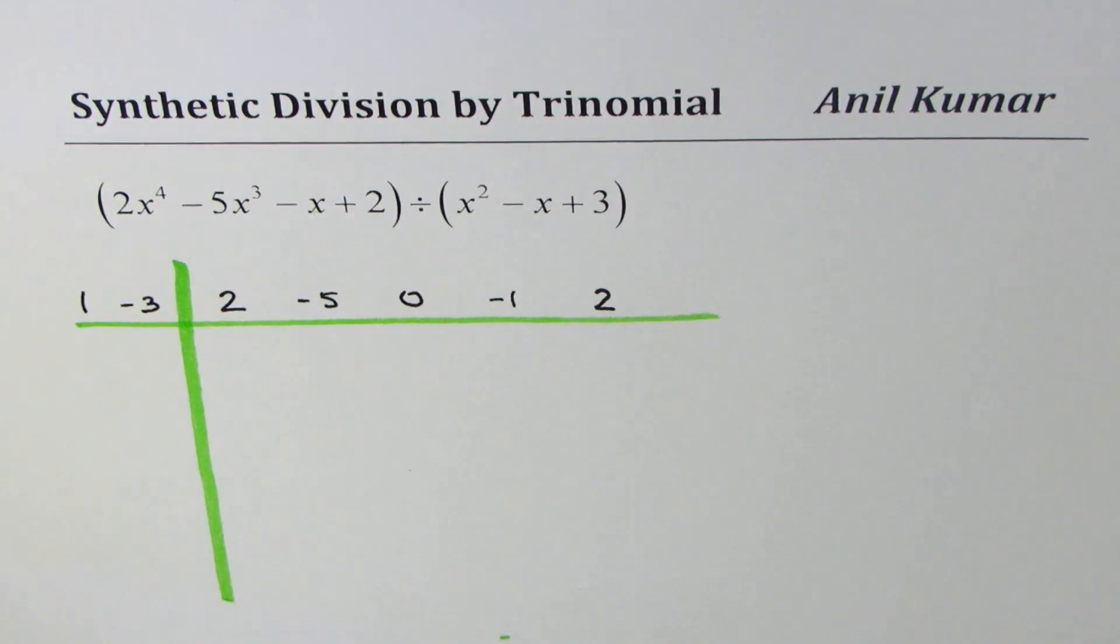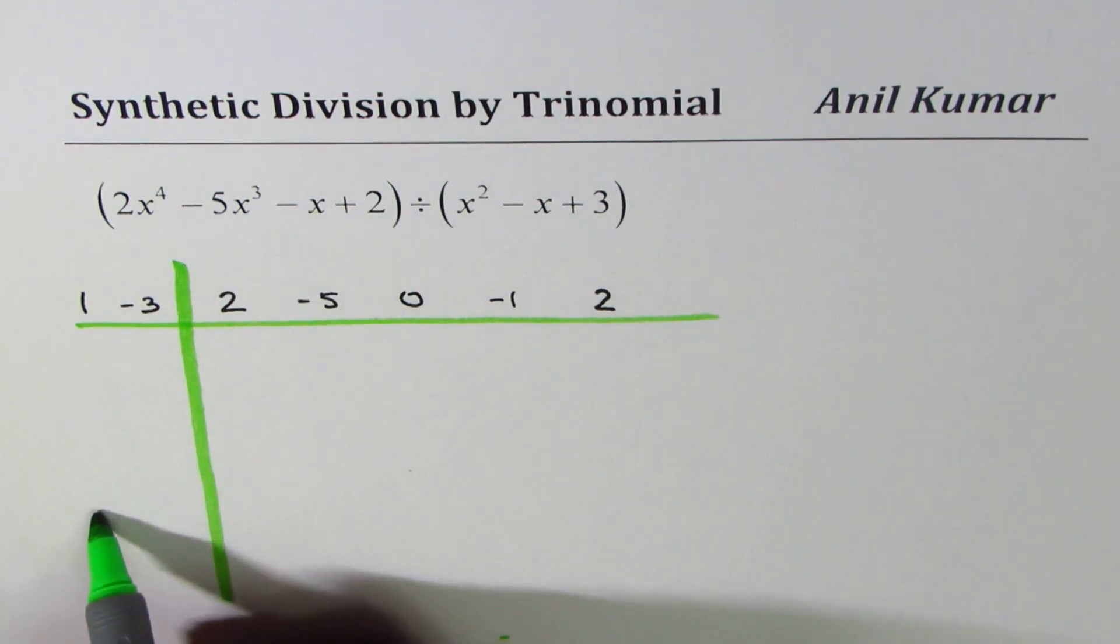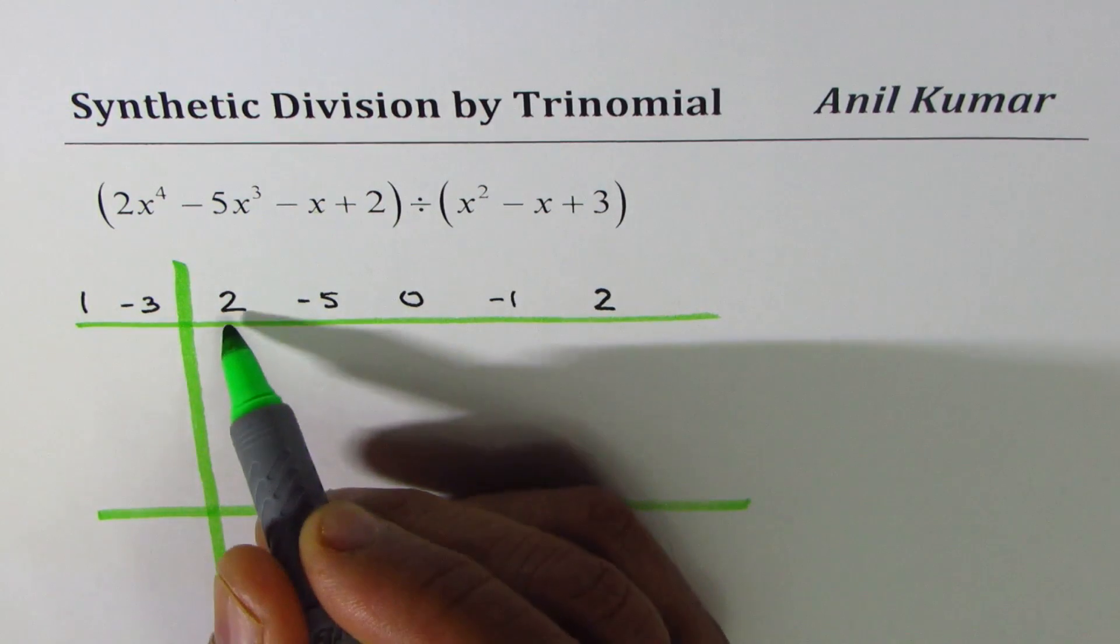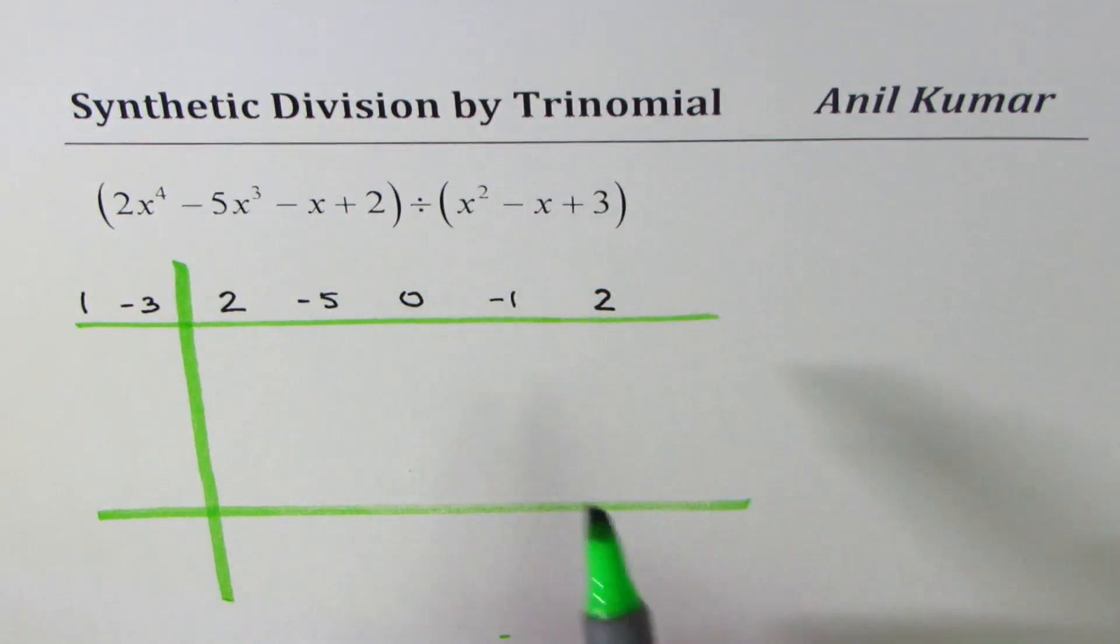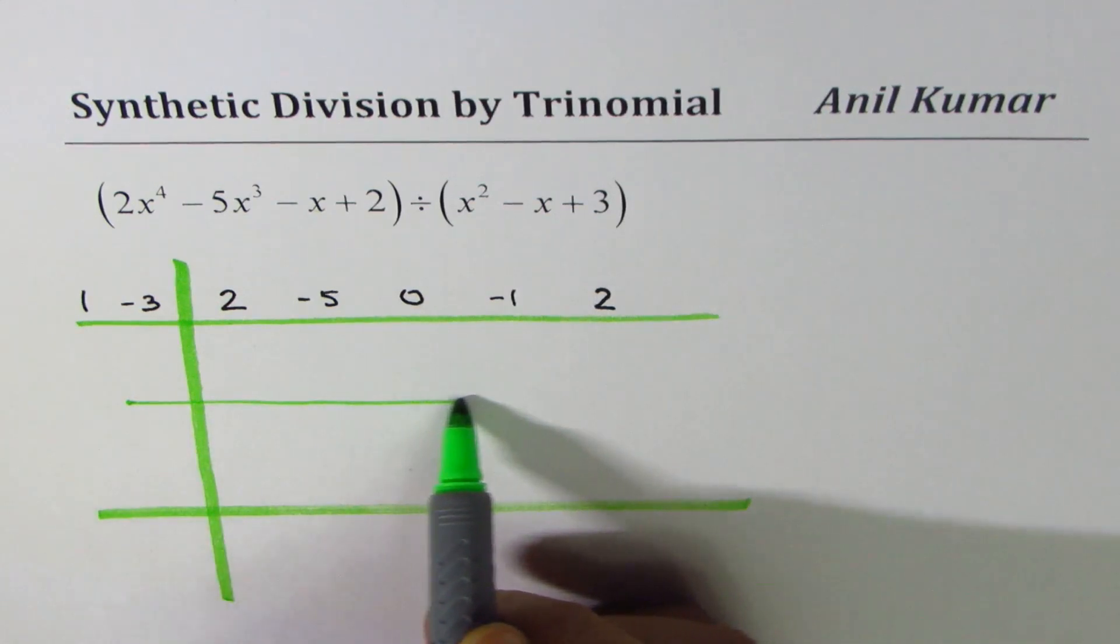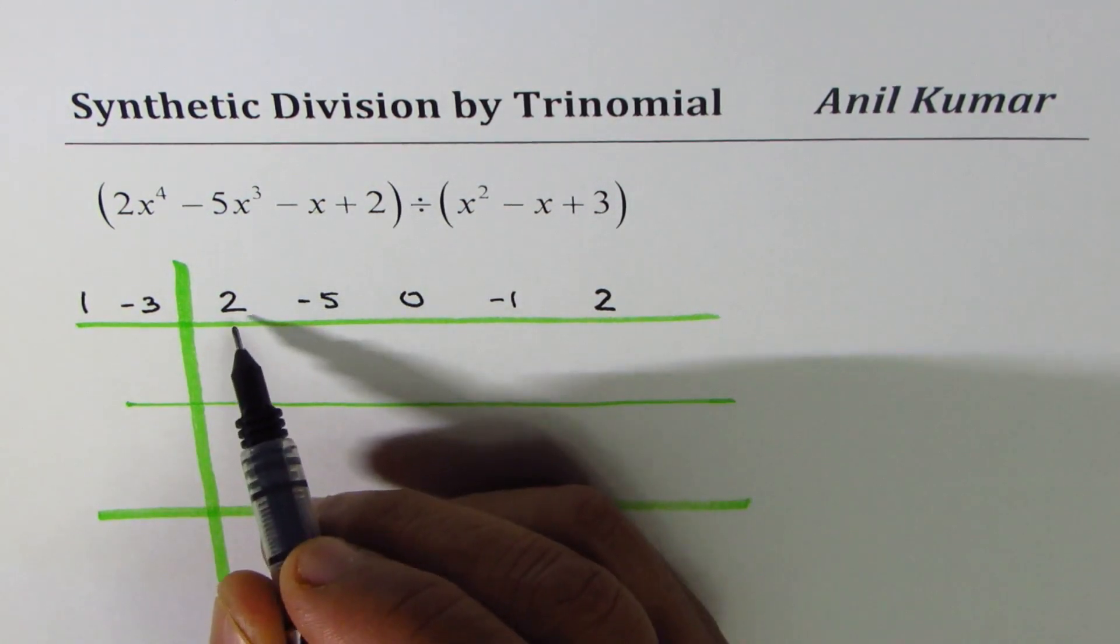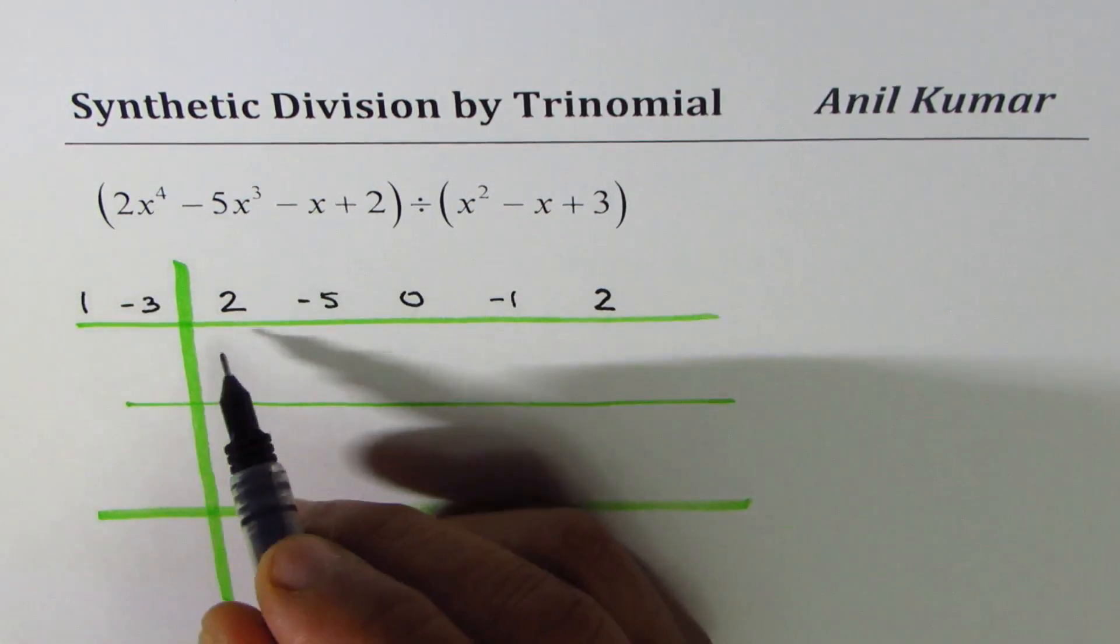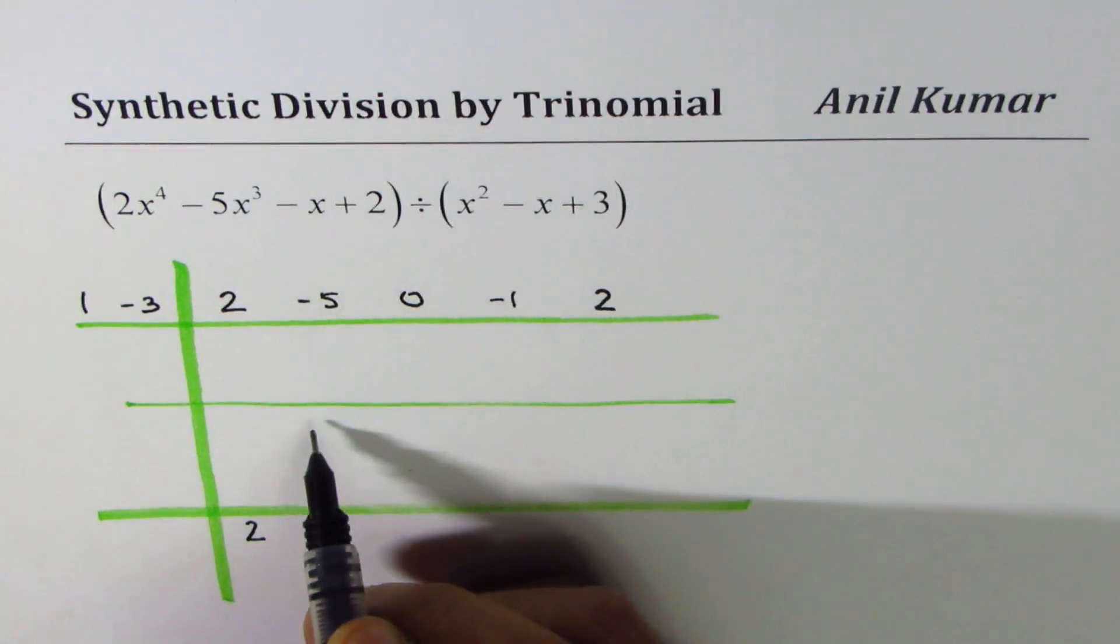The technique is similar to what we have already seen in synthetic division. That is to say, we'll bring down the first term. Since we have two terms to deal with, we actually bring down the second term also. For that, we have another layer here. I'm introducing an additional layer and that is the modification. So the first step is bring down the terms. The leading coefficient is always brought down, and then the next one also, but we'll place it above the second line which I have made, minus 5.